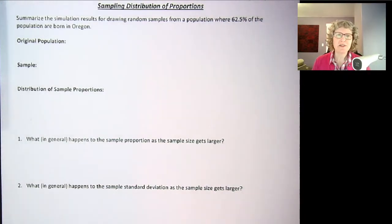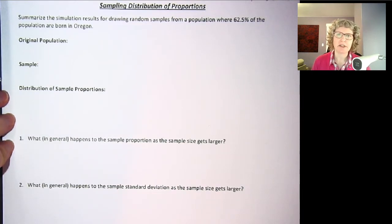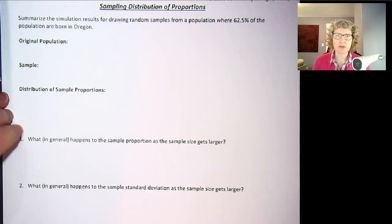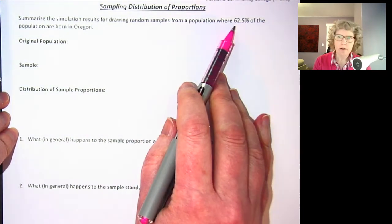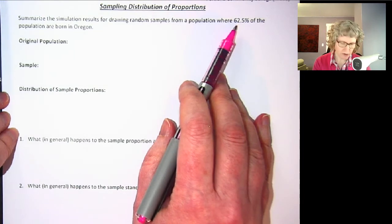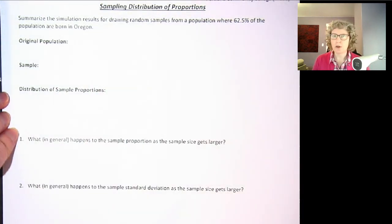Hi again. In this video we're going to summarize the results of our experiment and simulation of sampling distributions of proportions. Remember we had this question of were you born in Oregon and our population had a population proportion of 0.625 or 62.5% of the population was born in Oregon.